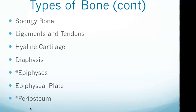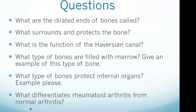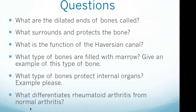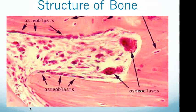At the articulating ends of bone is hyaline cartilage, which prevents direct bone contact and cushions the joint. Long bones have a cylindrical shaft called the diaphysis and dilated ends called the epiphysis — answering the first question. The epiphyseal plate is the site of new bone growth. The periosteum surrounds and protects the bone — answering the second question.